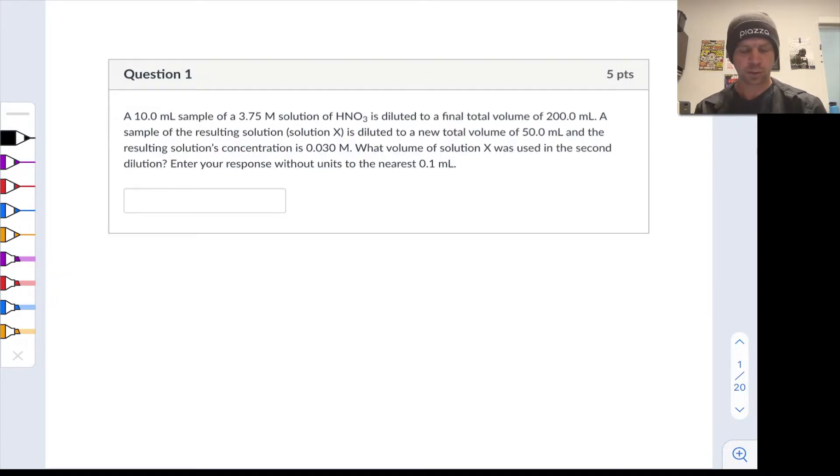So in this first question we've got a dilution problem. We start with a 10 mL sample of a solution of nitric acid that's 3.75 moles per liter that's diluted to a total volume of 200 milliliters. I'm going to walk through the problem statement here and underline the important quantities and then we'll proceed from there.